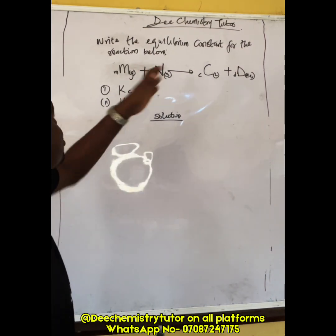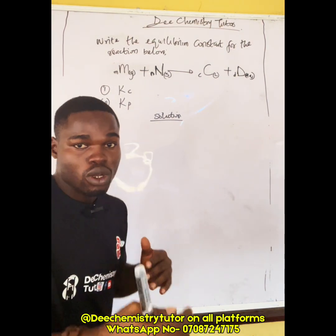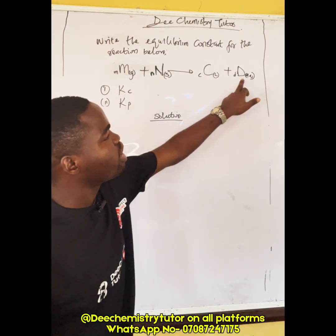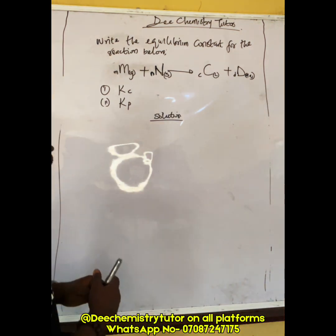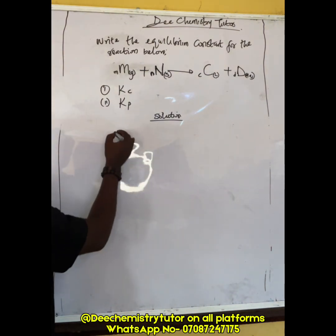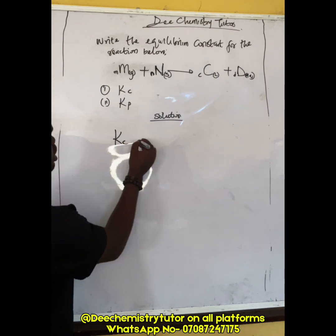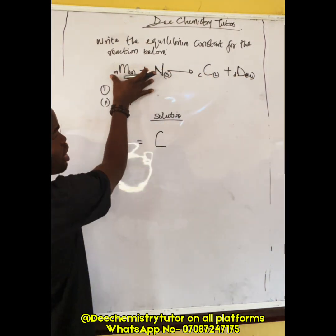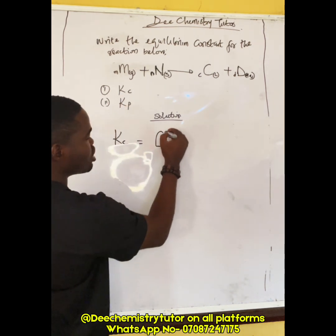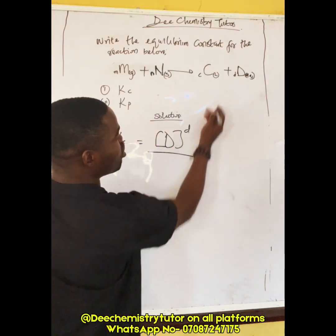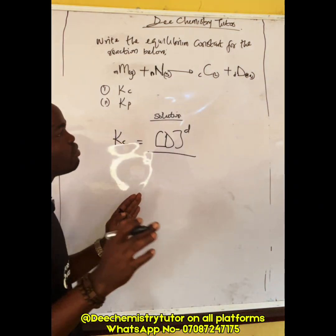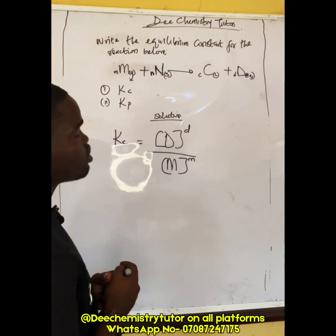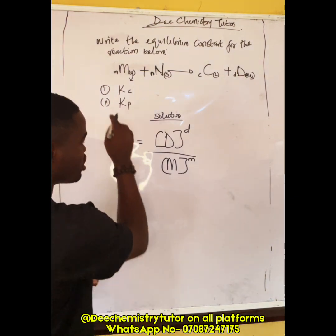Now applying this to the example question: we have M in the gaseous state, N as a solid, C as a liquid, and D as aqueous. For Kc, we consider gases and dissolved (aqueous) species. On the product side, C is liquid — we don't write it, it equals one. D is aqueous, so we write the concentration of D raised to the power d. On the reactant side, N is solid — excluded. M is gaseous, so we write the concentration of M raised to the power m.